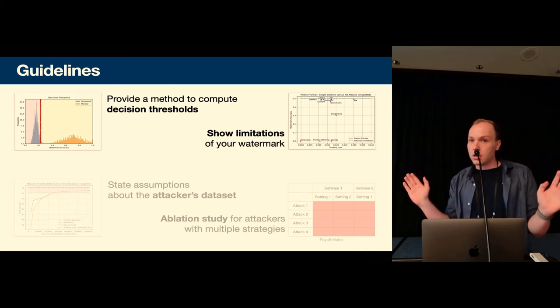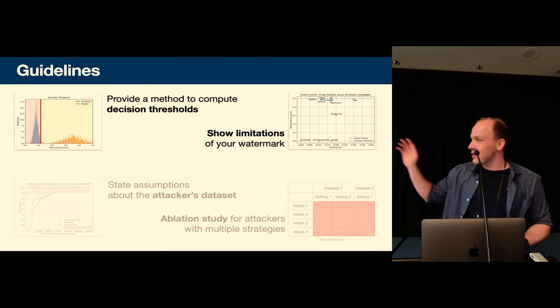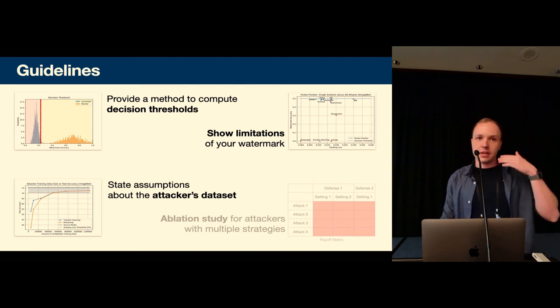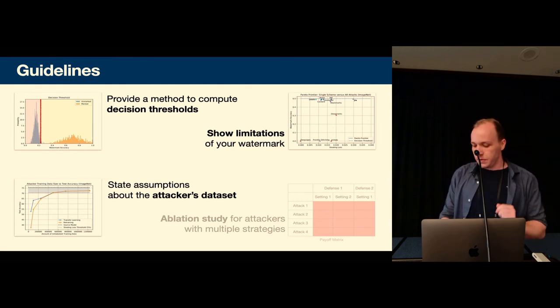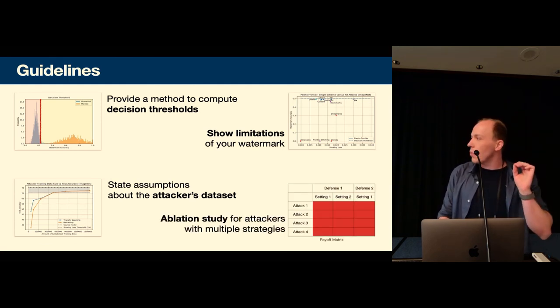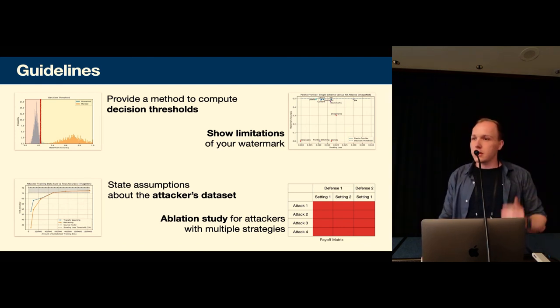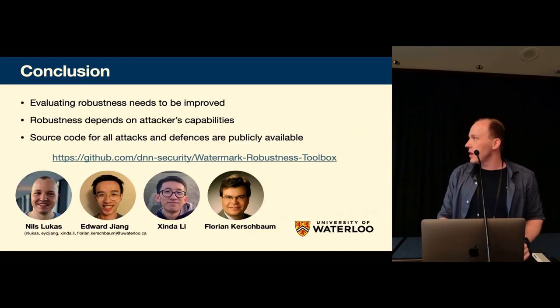None of the surveyed watermarks was robust and yours probably isn't either given that there's a highly capable attacker. State assumptions about the attacker's data set. We found that an attacker with a lot of data also has a lot of power and this is always unlabeled data. And finally we would prefer to see an ablation study with the Nash equilibrium for an attacker to get a complete view of the robustness of the watermark. And that concludes our presentation. Feel free to check out our source code on GitHub and I'm happy to receive any questions.